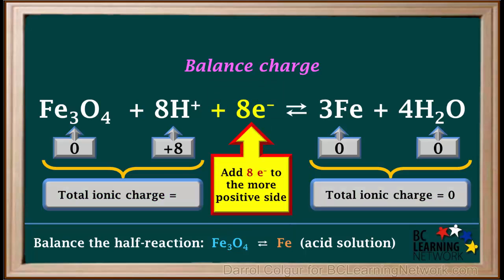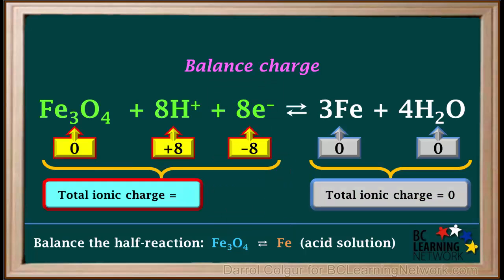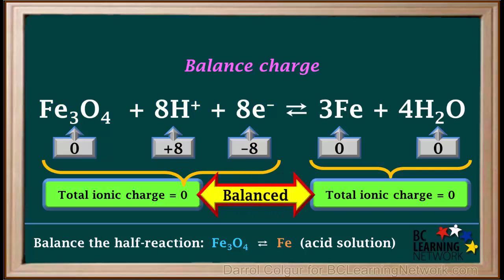So, we add 8 electrons to the left side. The total ionic charge on the left side is now zero plus 8 plus negative 8, which add up to zero. So, the charges are now balanced, being a total of zero on both sides. Note here that charges on each side of a half reaction do not always have to be zero. They just need to be equal to each other.